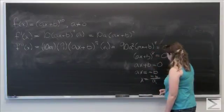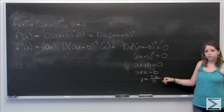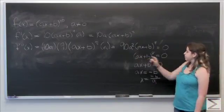So here you can see that when x equals negative b over a, our second derivative will equal 0.